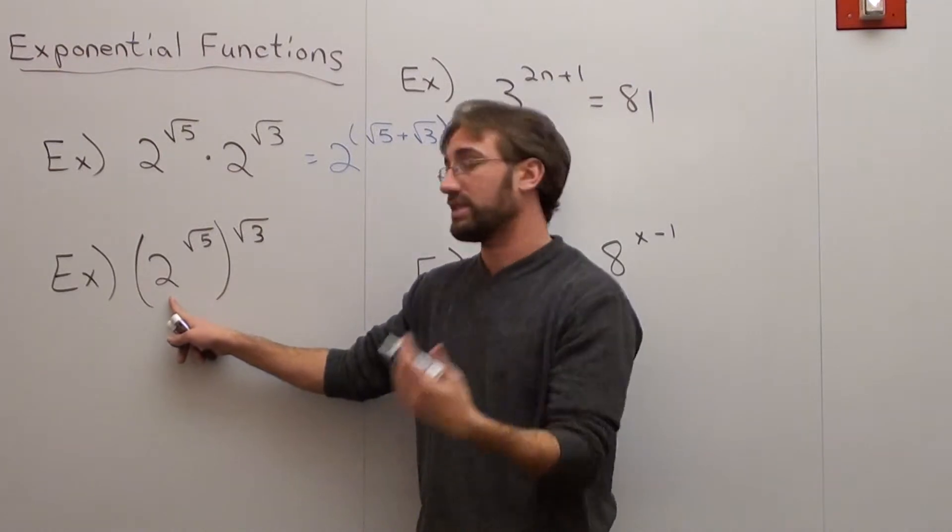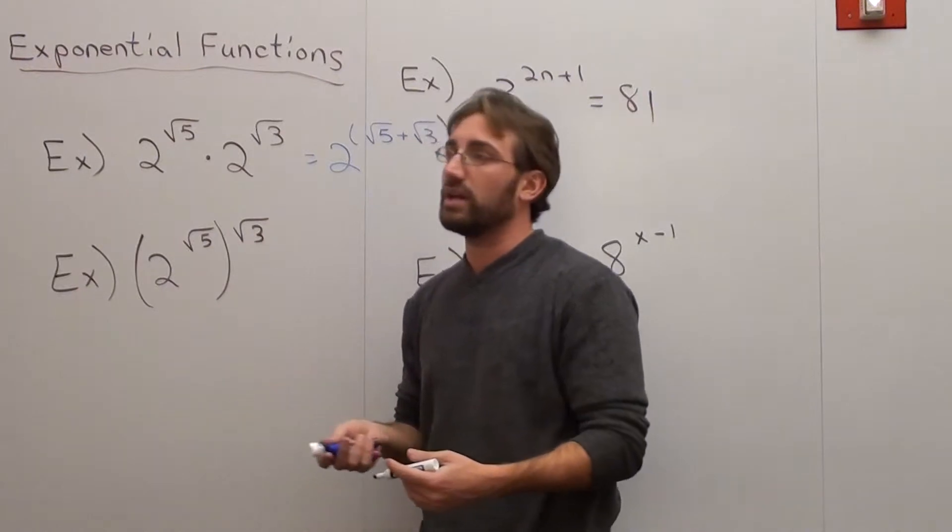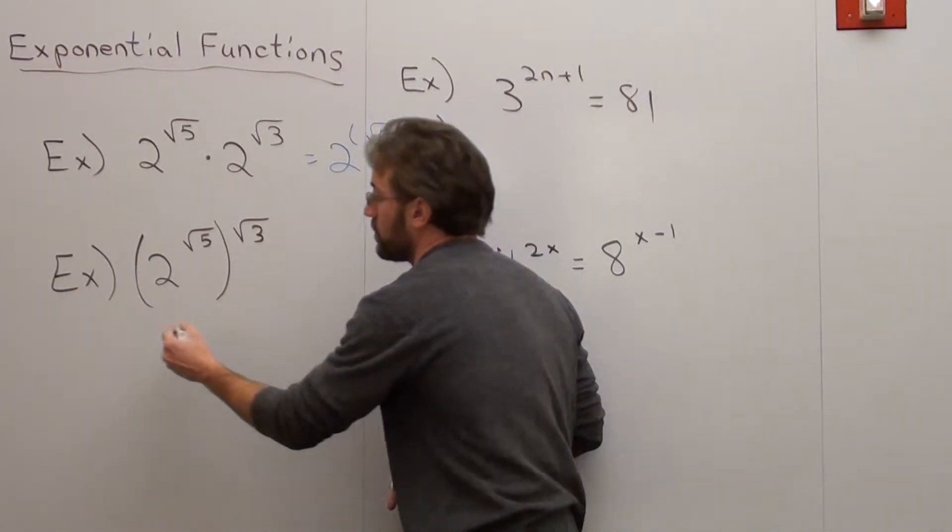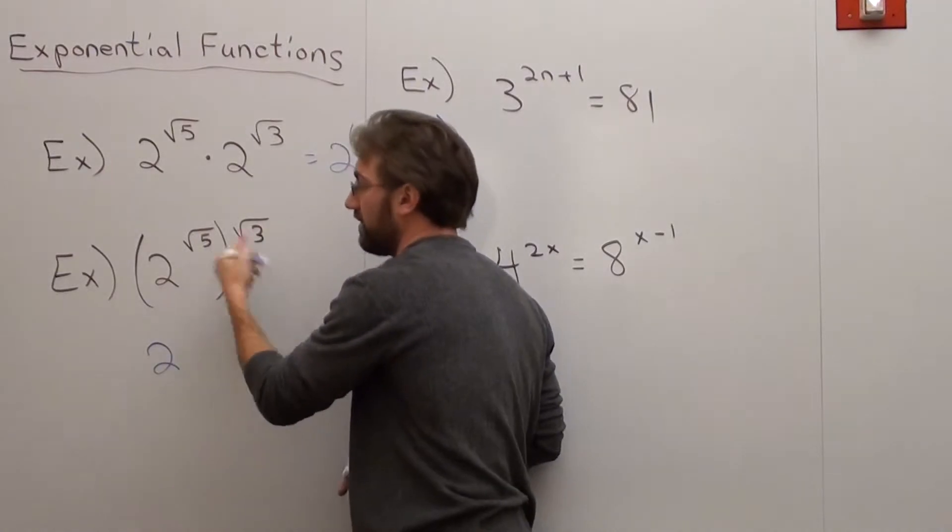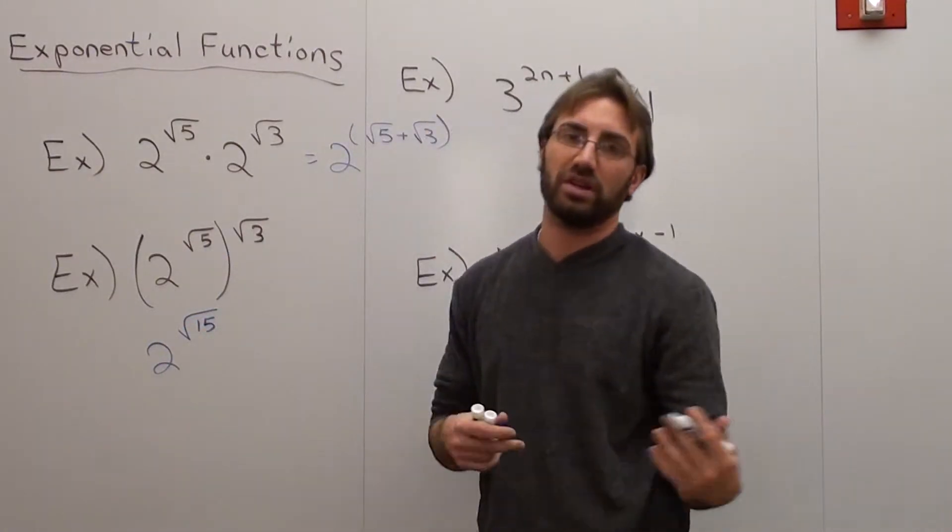Here, let's say we have 2 to the 5 to the 3rd. That would be 2 to the 15th. Well you do the same thing here, except now they're roots. And if you can combine them, you can combine them. So this is 2 and root 5 times root 3 is root 15. And you can't do anything with root 15.